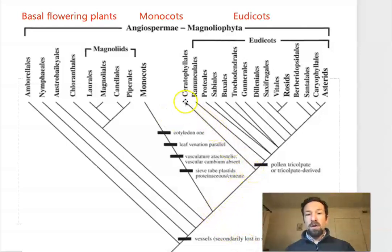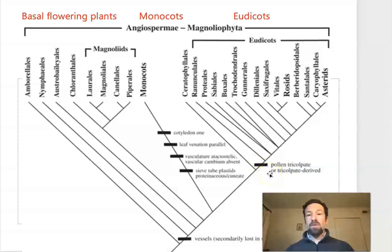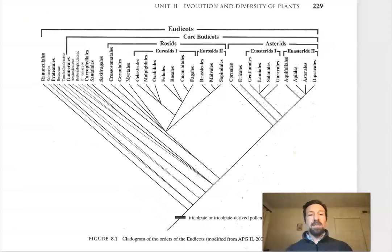What we can see is that there's one small group that diverges earlier, then Ranunculales is our next order of early diverging eudicots. Since we are now in the eudicots, we expect to see some traits in common, and the one recorded here is tricolpate pollen, meaning that there are three pollen apertures. We talked about that trait as a synapomorphy of the eudicots already, and if we expand the eudicots out, we can see that there's a lot more diversity as we start looking at some smaller groups.